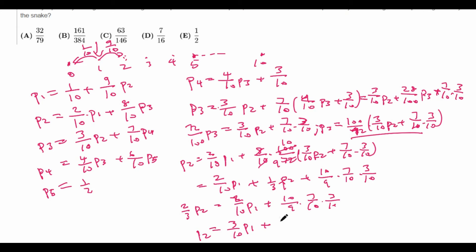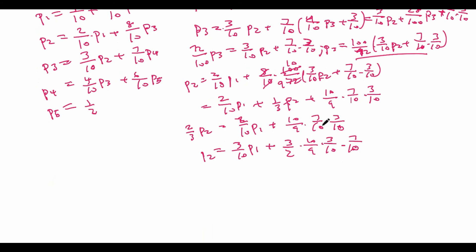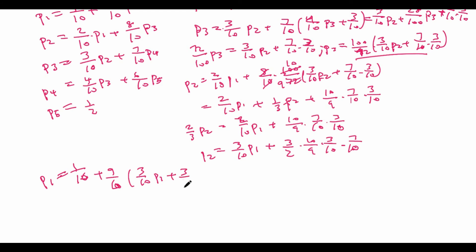So we have p2 equals 2 tenths p1 plus 10 ninths times the quantity 3 tenths p2 plus 7 tenths times 3 tenths. We need to compute 10 ninths times 3 tenths p2 to subtract from both sides. The 3 and the 9 cancel to give 1 third, and the 10s cancel, so we just get 1 third p2. Subtracting 1 third p2 from both sides gives 2 thirds p2 equals 2 tenths p1 plus 10 ninths times 7 tenths times 3 tenths. Solving: p2 equals 3 halves times 2 over 10 p1, which gives 3 tenths p1, plus the remaining constant term. Let's just write it all out.